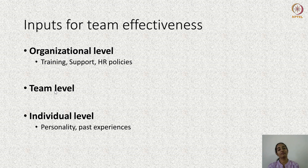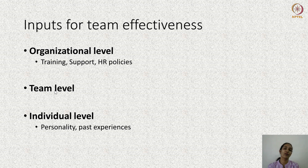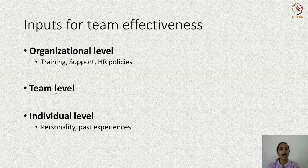At the organization level, factors affecting team effectiveness include training, support, and HR policies. For example, if the organization provides a lot of training for team members on how to work with AI counterparts, they will likely get along better. Having seen inputs at the individual and organization levels, let us proceed to the team level.